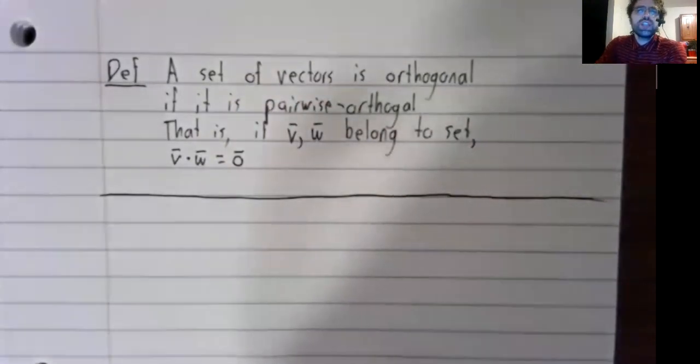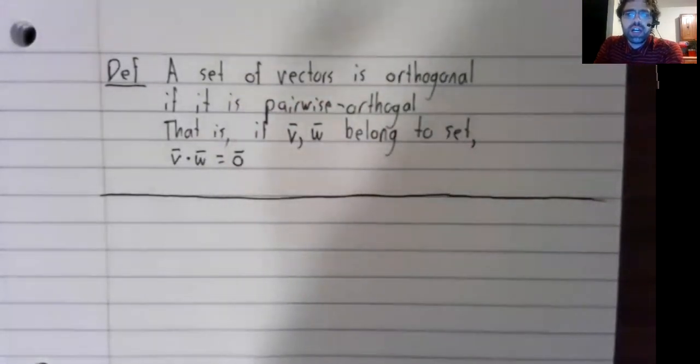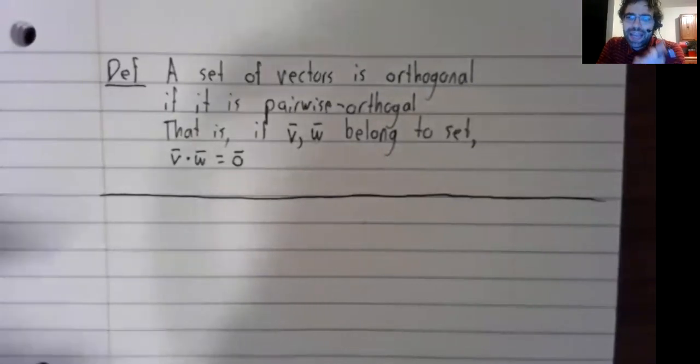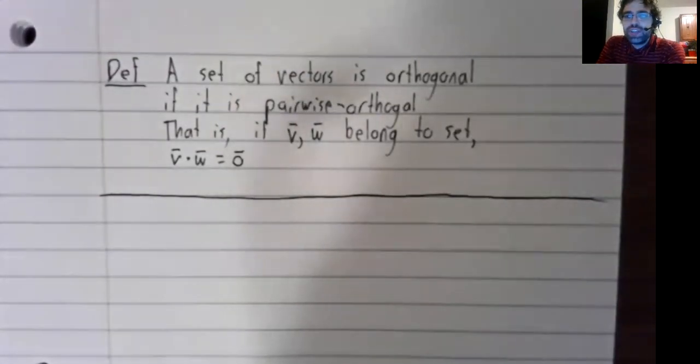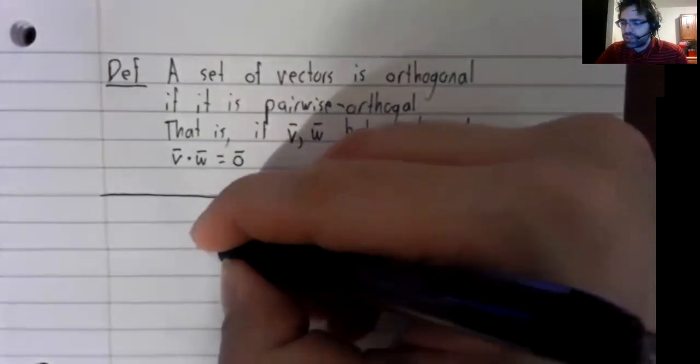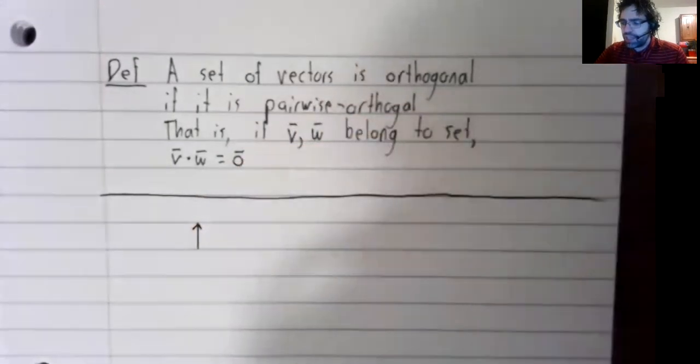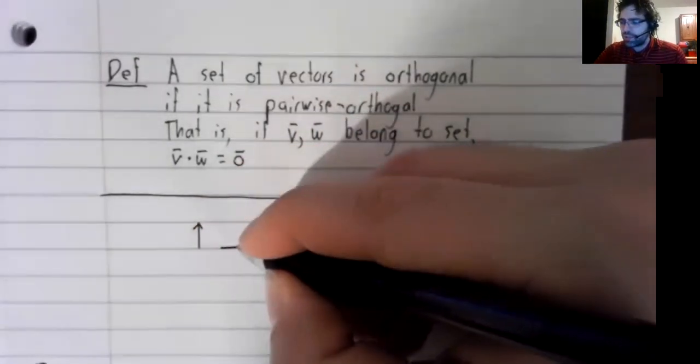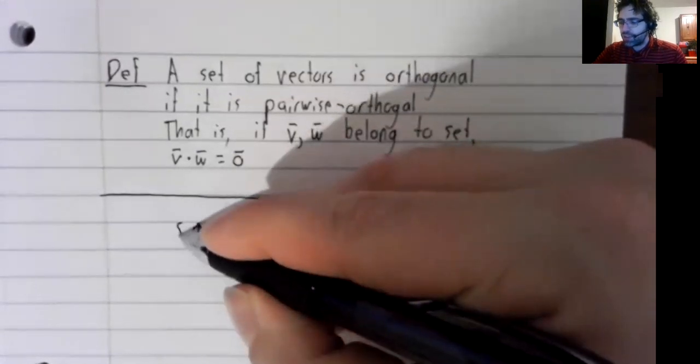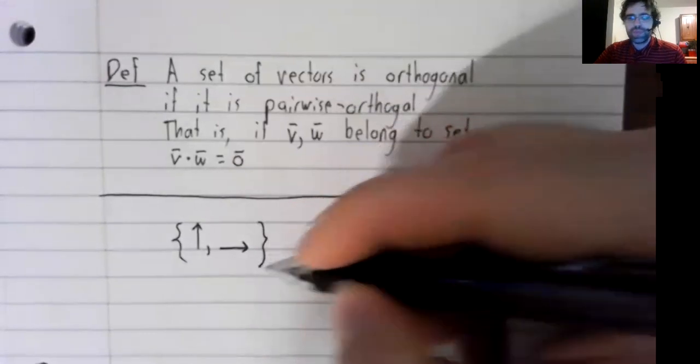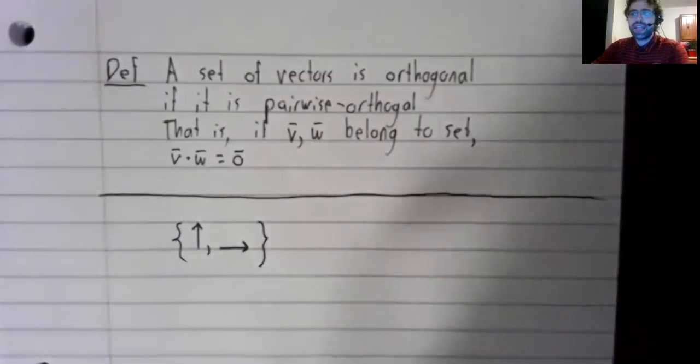At least in R2 and R3, where it's easy to have an intuition of what an angle is, this definition is intuitive enough. It's a set of vectors that intersect each other at right angles.